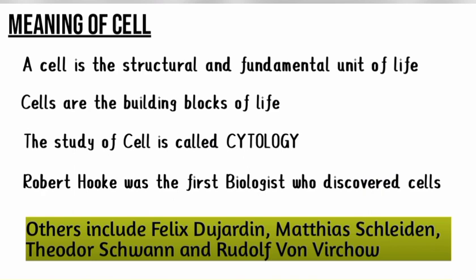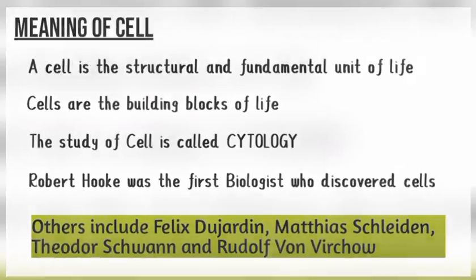The word 'cyto' comes from Greek, meaning cell, so whenever you see the prefix 'cyto,' it is referring to the cell. Robert Hooke was the first biologist to discover the cell. We also have other scientists including Felix Dujardin, Matthias Schleiden who is a botanist, Theodor Schwann who is a zoologist, and Rudolf Virchow who is also a scientist. These scientists all performed research regarding the cell, but Robert Hooke was the first and is regarded as the father of the cell.